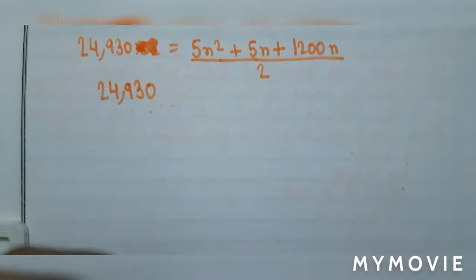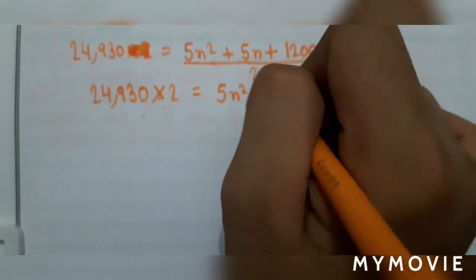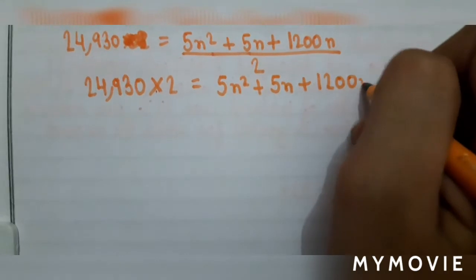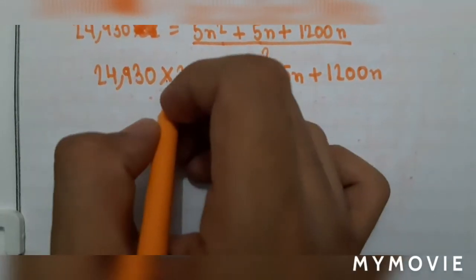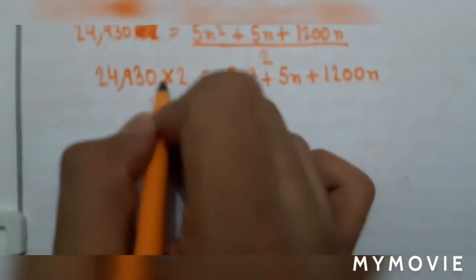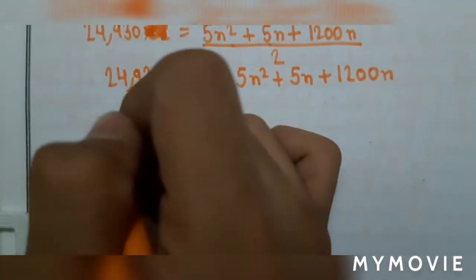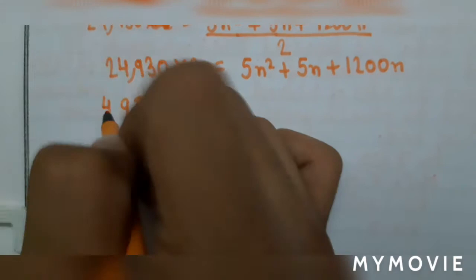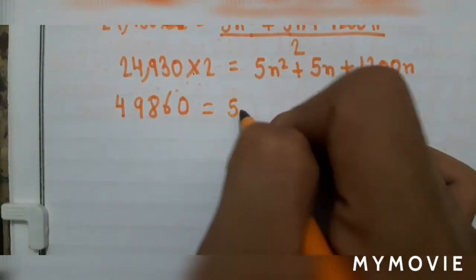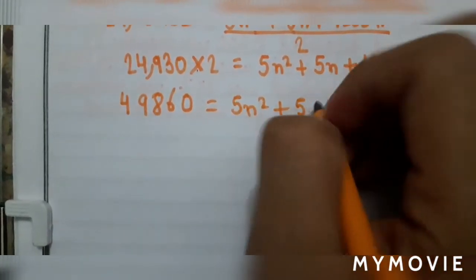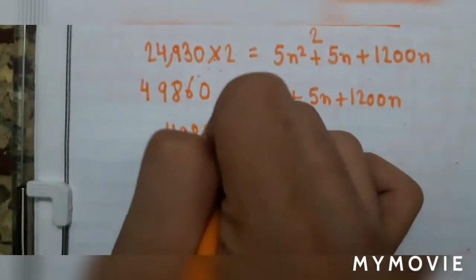Multiply 2 with 24930 to get 49860. So 49860 equals 5n squared plus 5n plus 1200n.